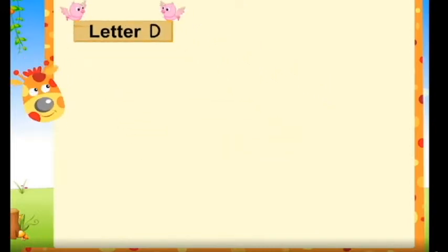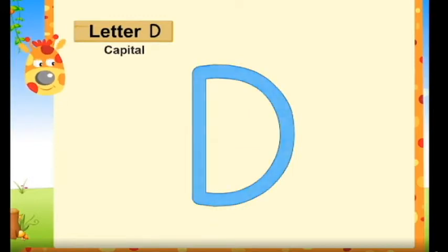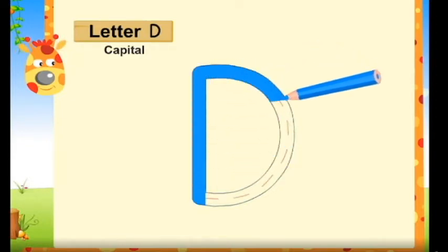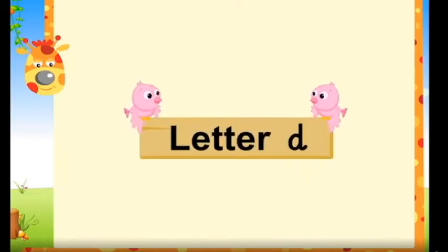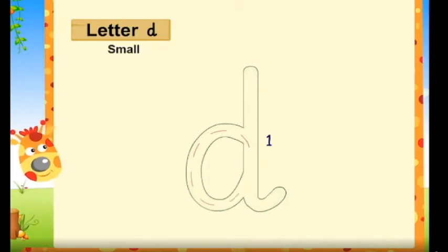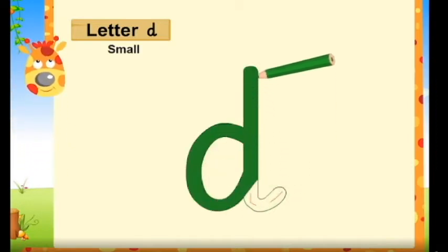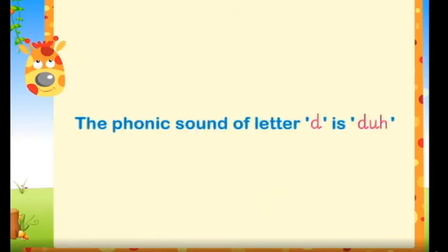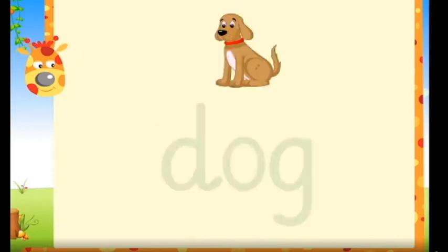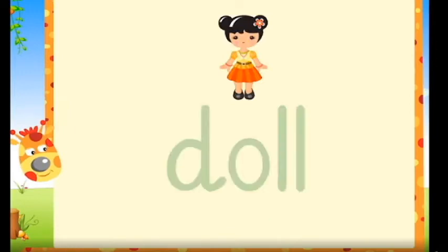So now take your notebook. Letter D — capital D. Letter D — small d. The phonic sound of letter D is da. Some words with letter D: dog, doll, door, door, duck.